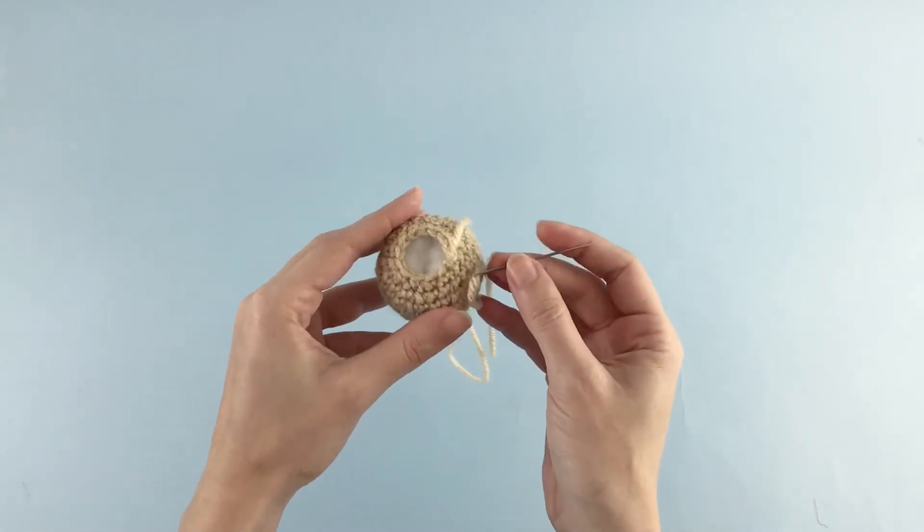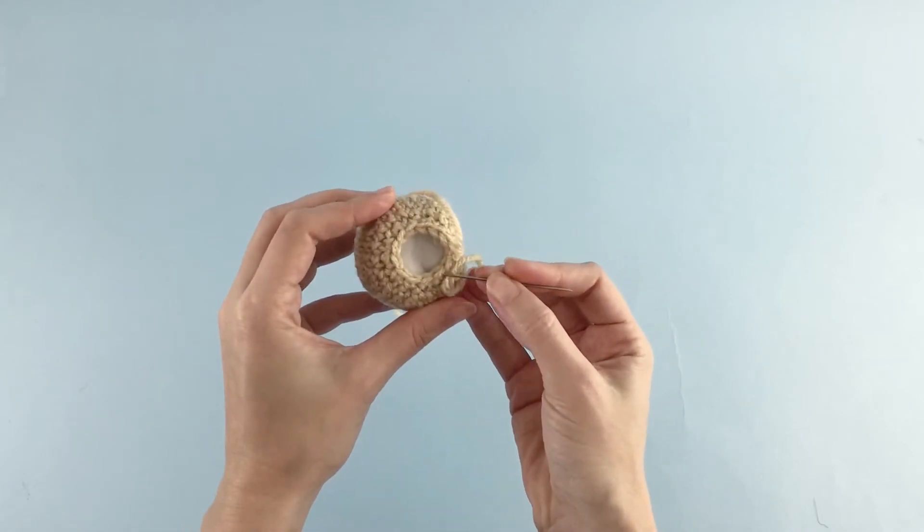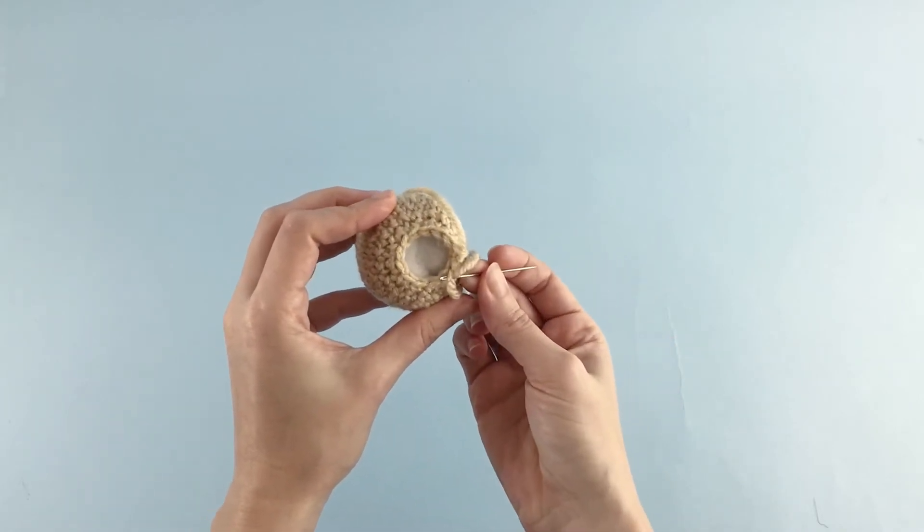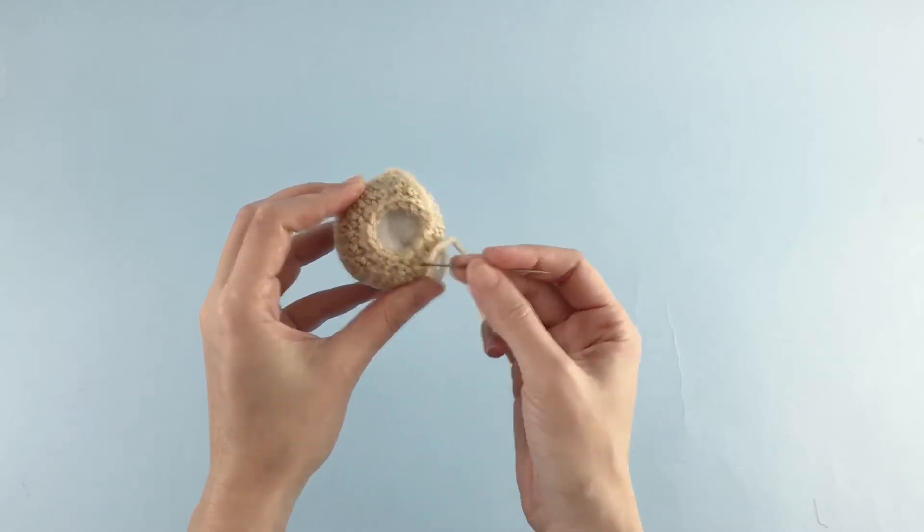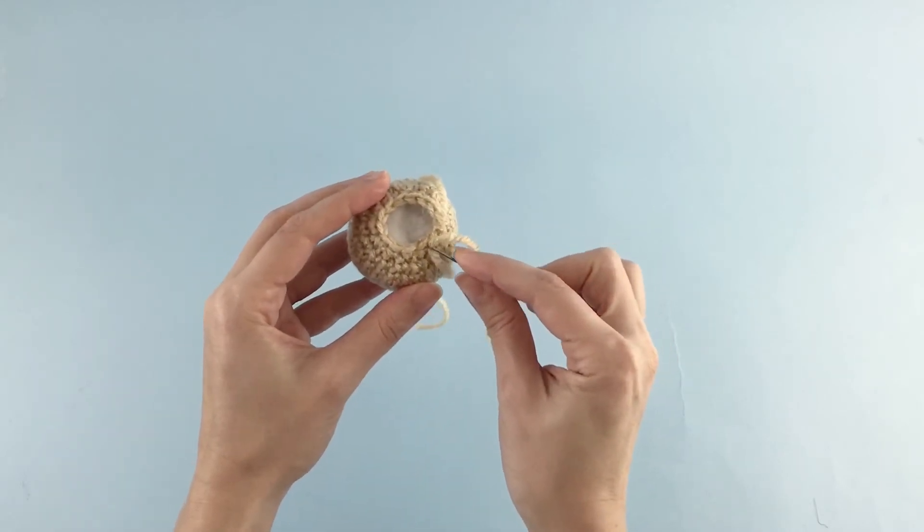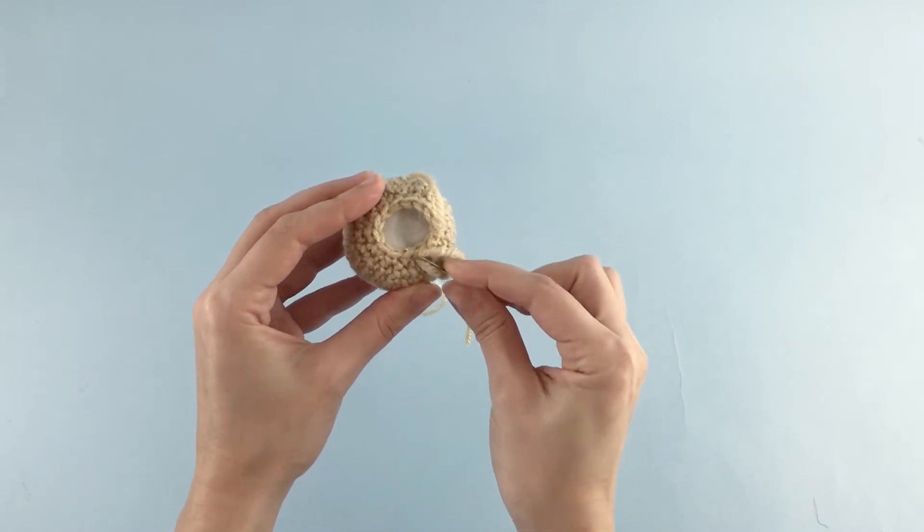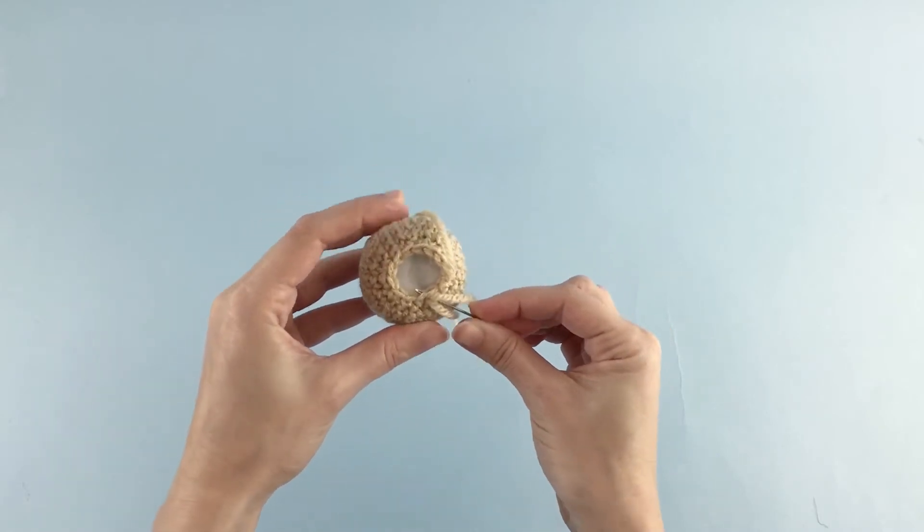Now what I'm going to do is I will be inserting the needle inside the front loop of the two first stitches. So here I have the first stitch, second stitch, front loop only.